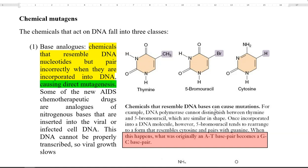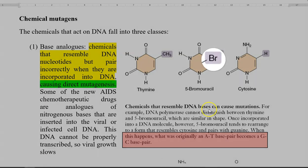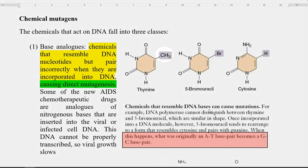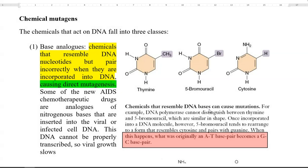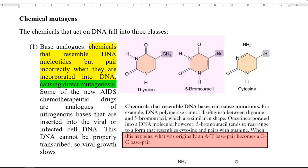On the right-hand side, you can see the diagram showing the base analog bromo-uracil. Bromo-uracil is a base analog of thymine. You can see the structures of thymine and bromo-uracil are the same with a single change — the presence of a bromine group in bromo-uracil and a methyl group in thymine.